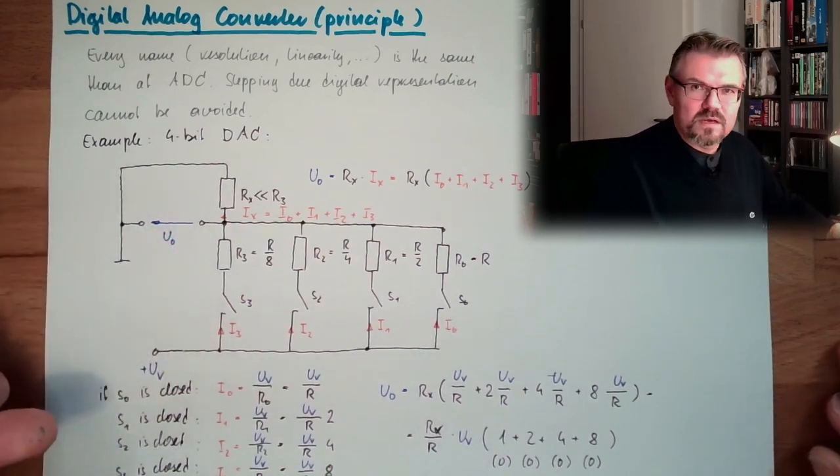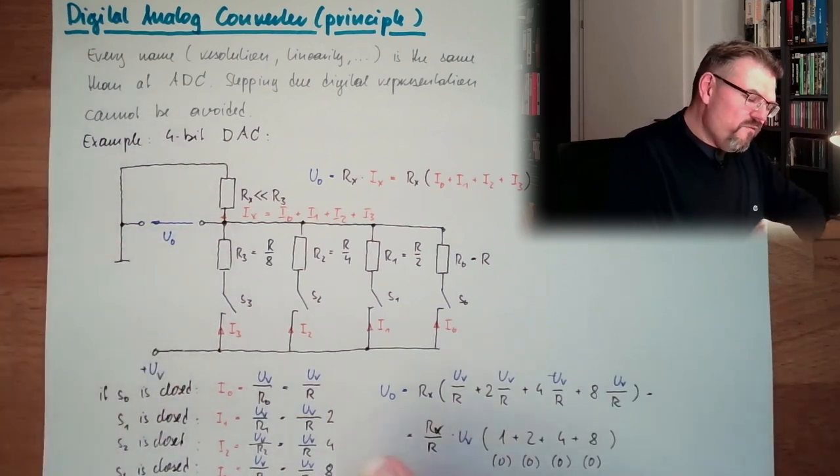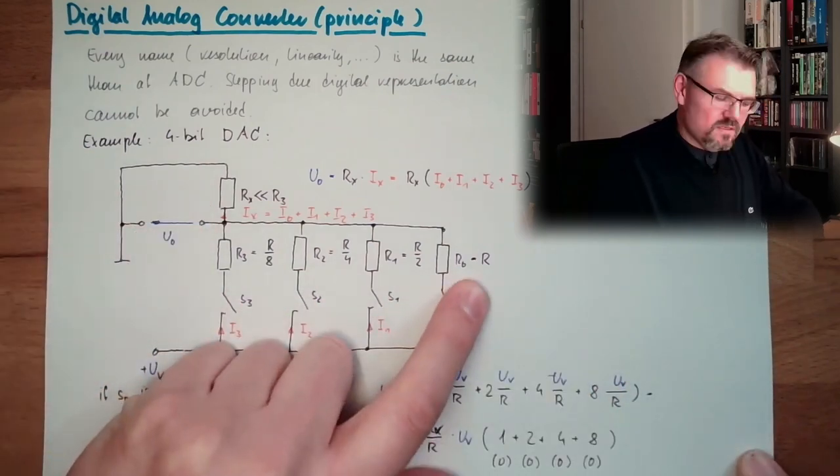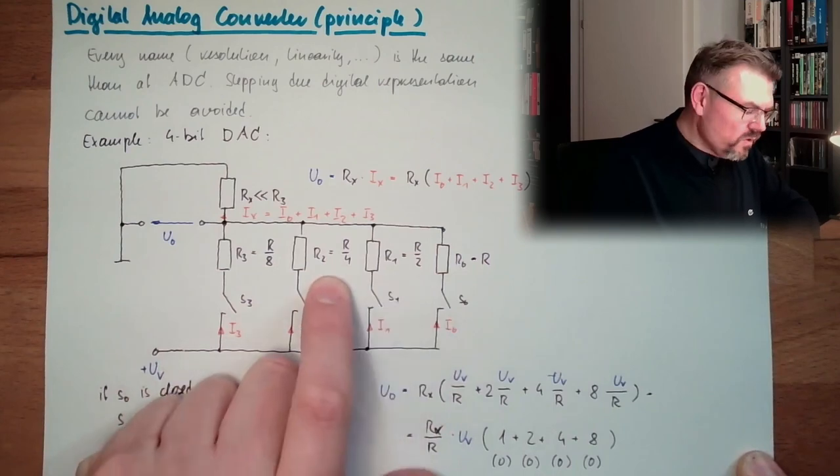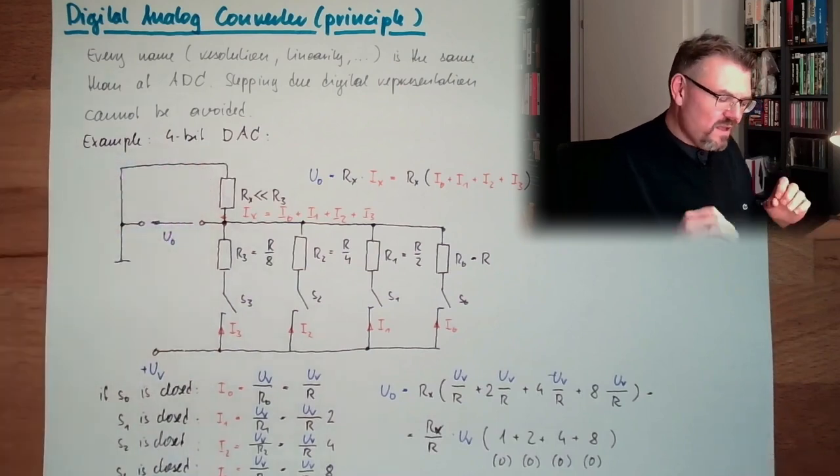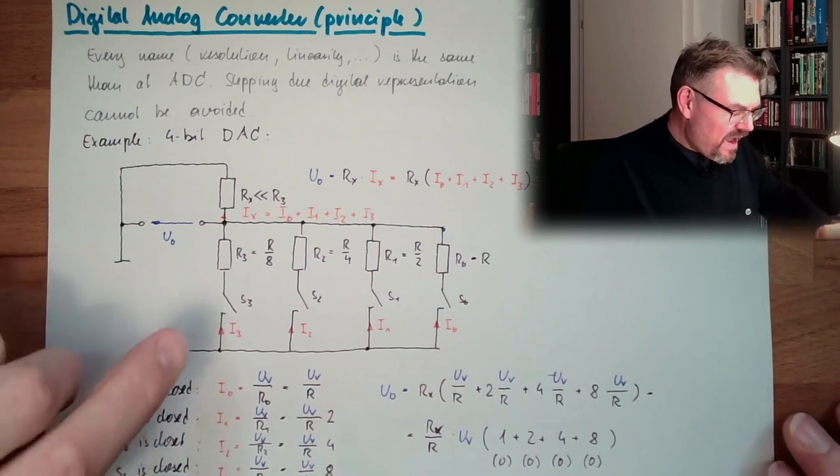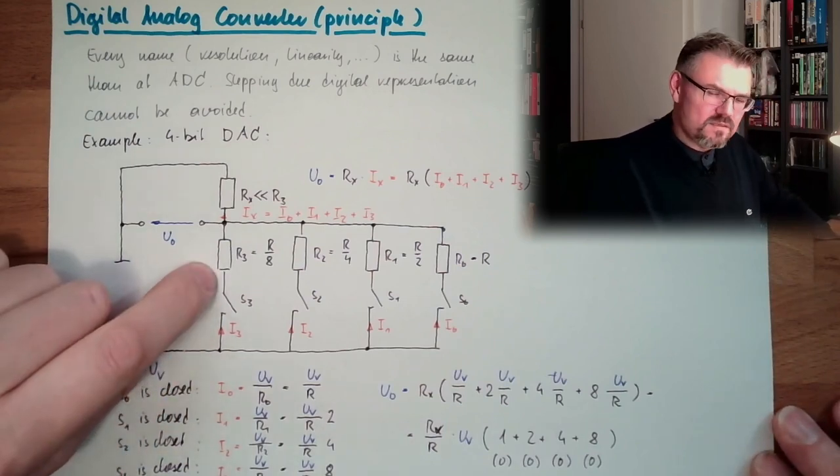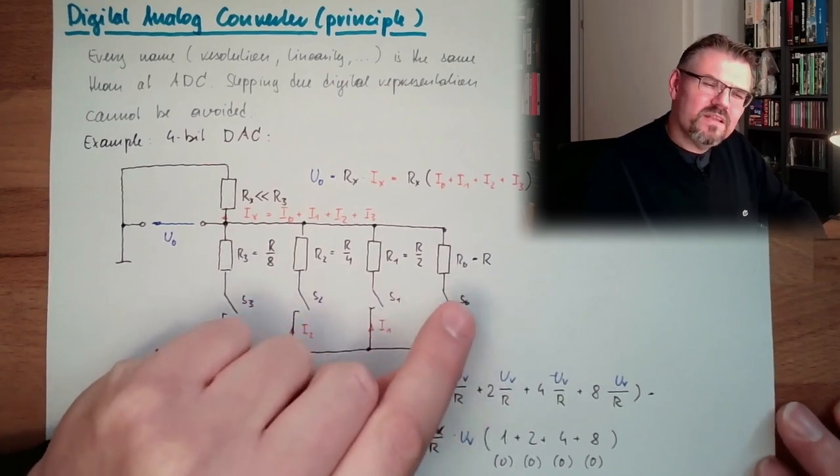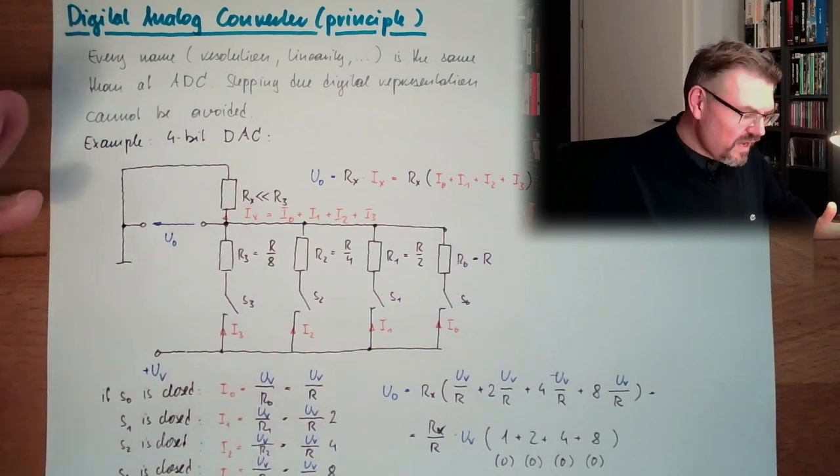So the output voltage is reflecting the value of the digits because the resistors here are selected in exactly that way. In theory, this looks nice. In theory, this is working. However, you see, we have a wide variant of resistors. This is one resistor, this is only half the resistor, this is quarter, this is eighth. And then you need an even smaller one. And all must be very accurate. I have here tiny resistors and I have big resistors. And the big resistors must be absolutely as accurate as the tiny resistors. I cannot achieve this.